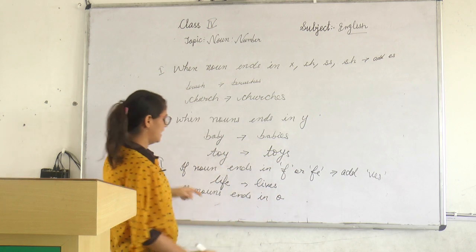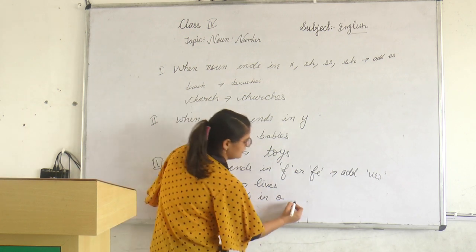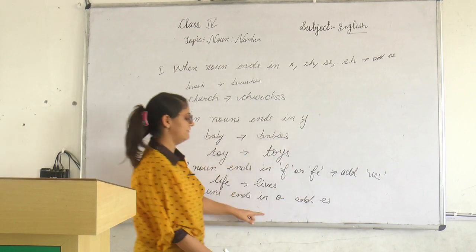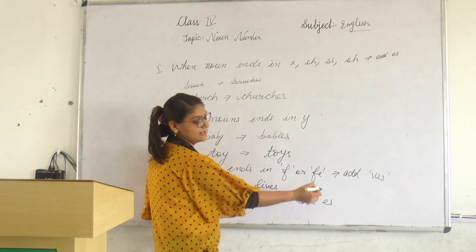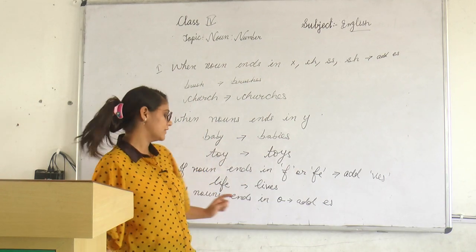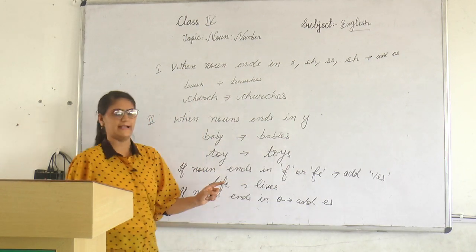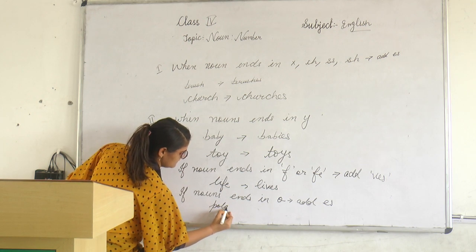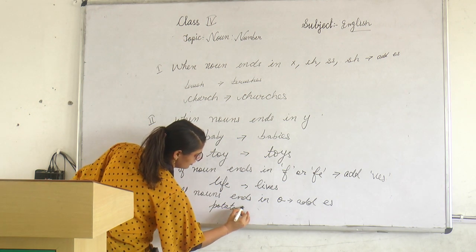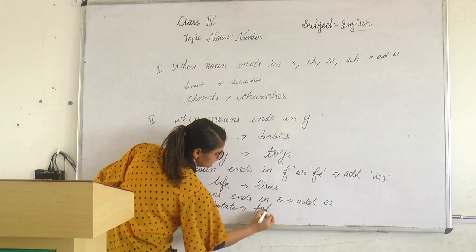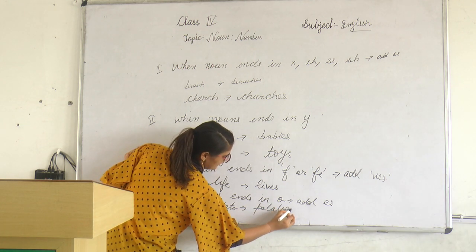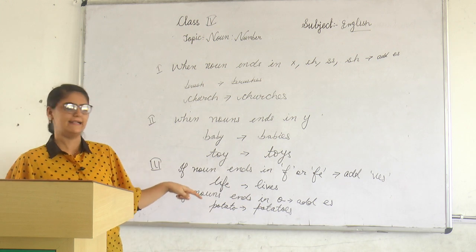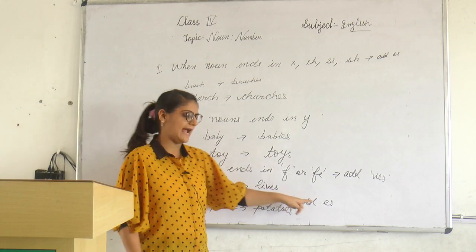If the noun ends in O, then we add ES to make it plural. For example, potato becomes potatoes. In the same way, mango ends in O and we add ES to make it plural, giving mangoes.